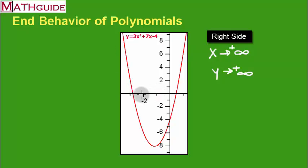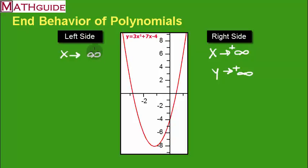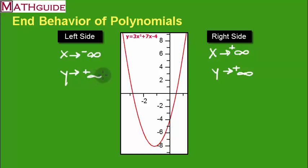Now let's talk about the left side. On the left side, the x values are going to the left and getting smaller and smaller. The graph is going left and it's going up forever. So if the x values are going left forever, they're going to negative infinity — they approach negative infinity. And as we look at the curve moving to the left, the curve takes you up and goes up forever. So we say the y values keep getting larger and larger. That's the end behavior of this example.